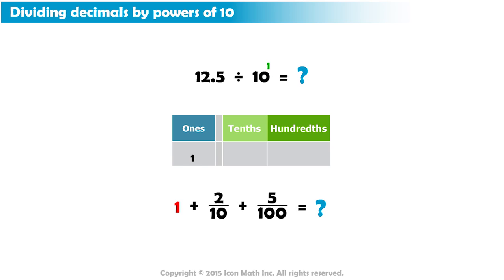So we write 1 in the ones place. And we have two fractions, so we need a decimal part. We write a decimal point. 2 tenths is represented by the digit 2 in the tenths place, and 5 hundredths is represented by the digit 5 in the hundredths place. This is the resulting decimal, 1 and 25 hundredths.